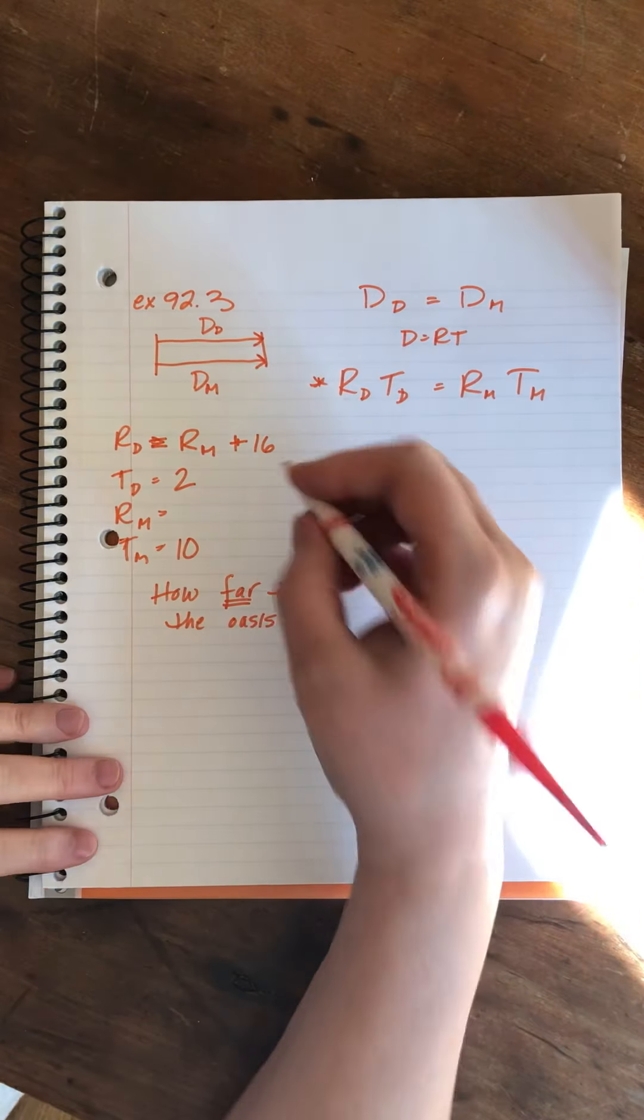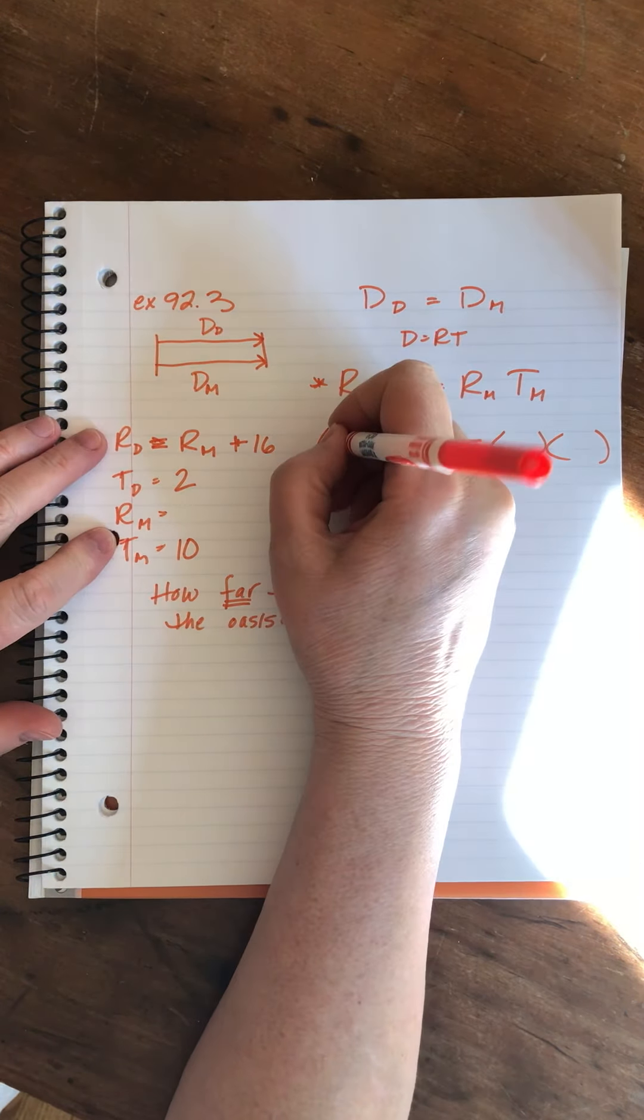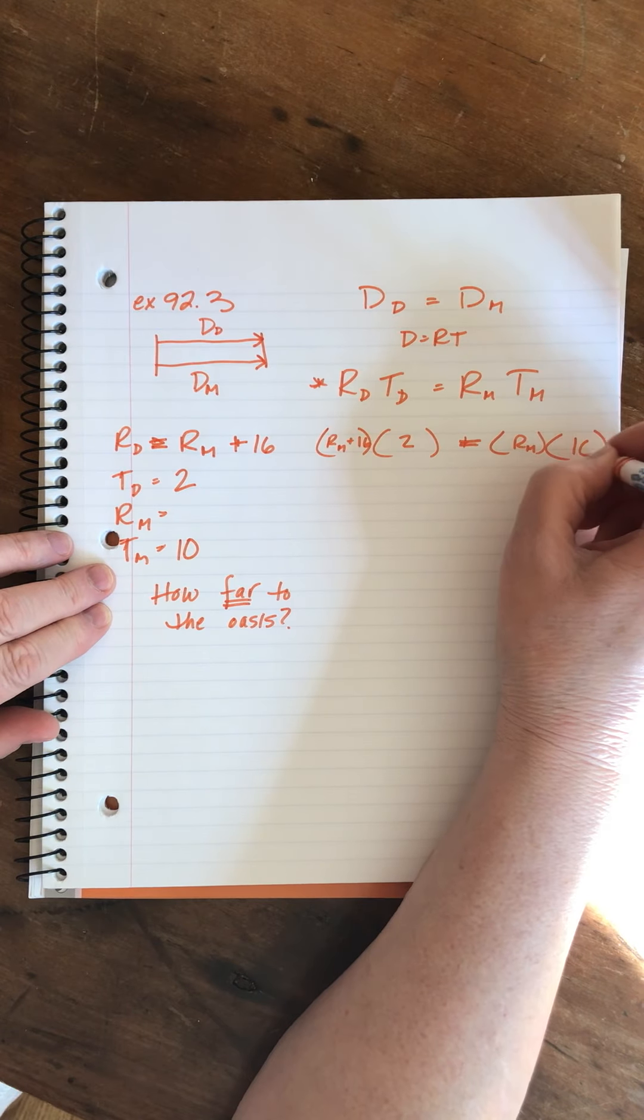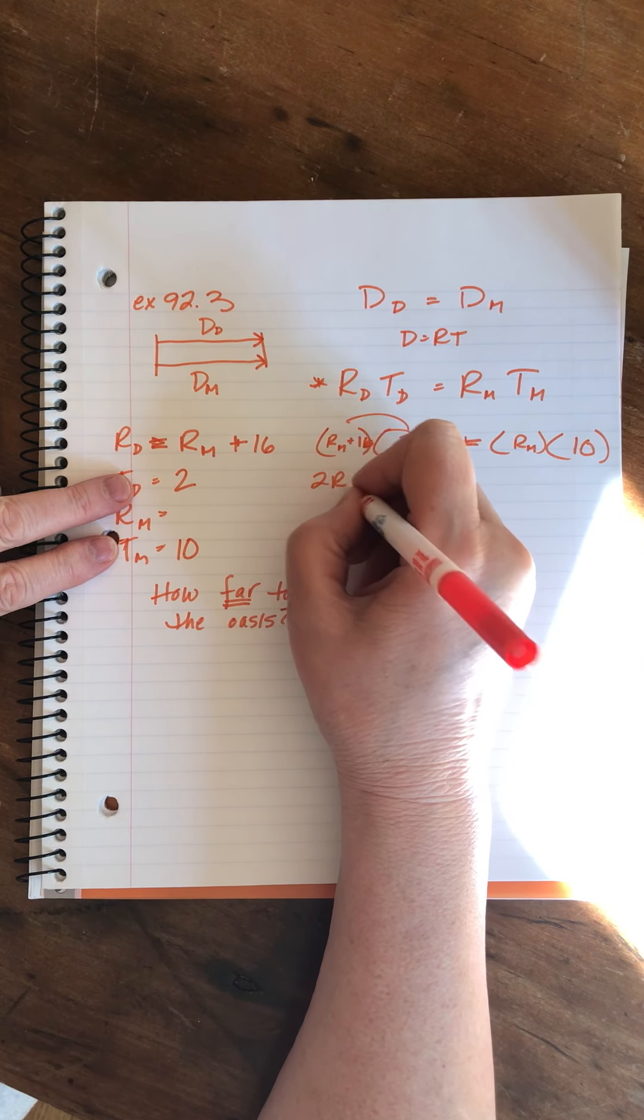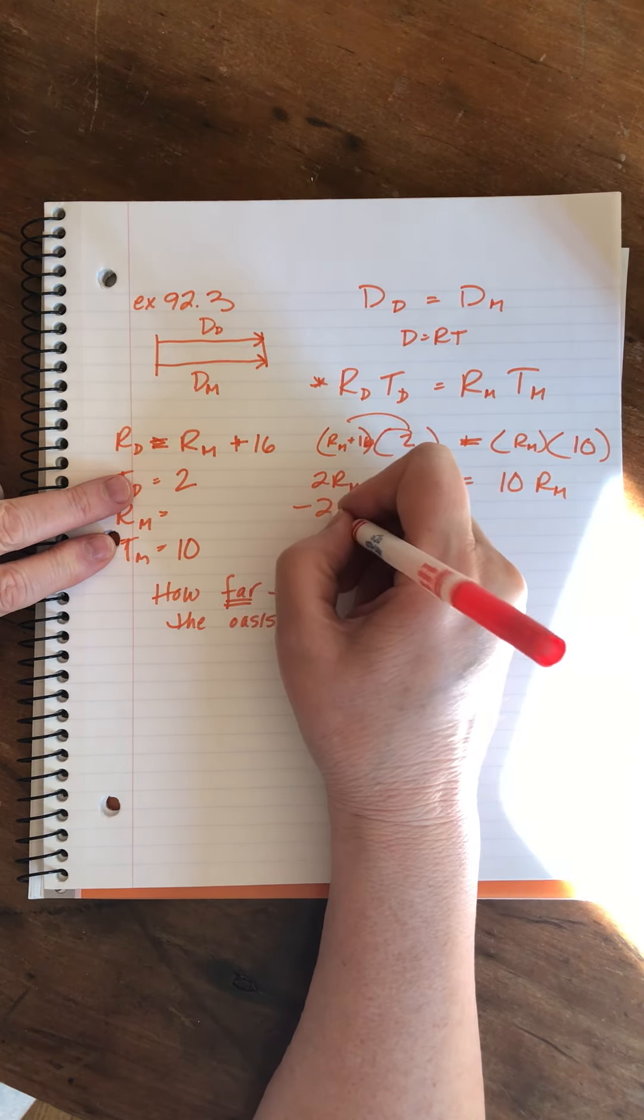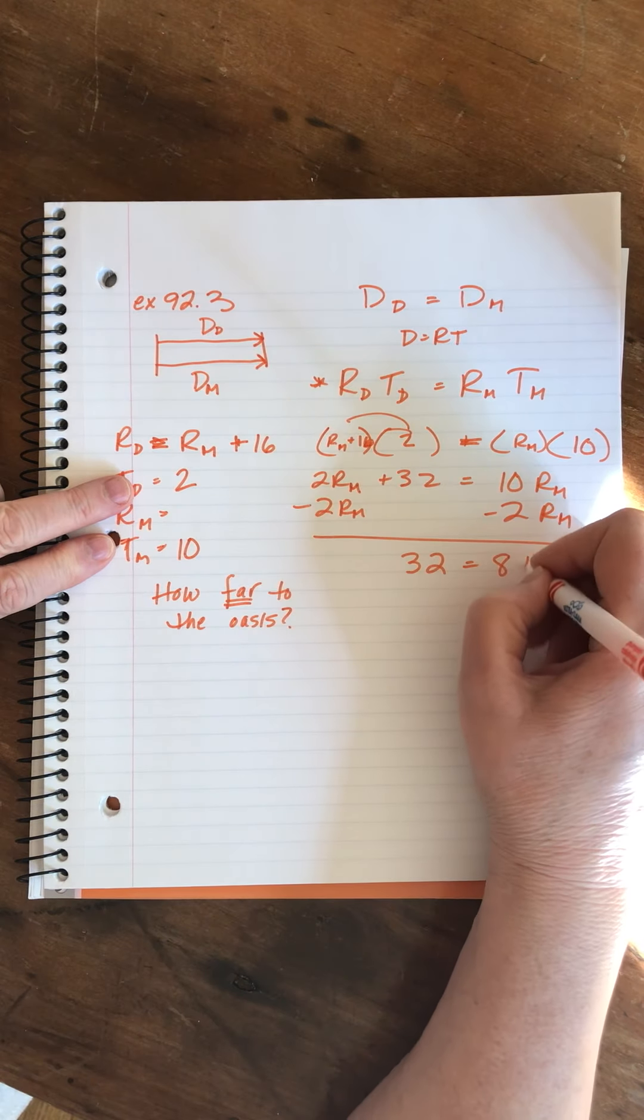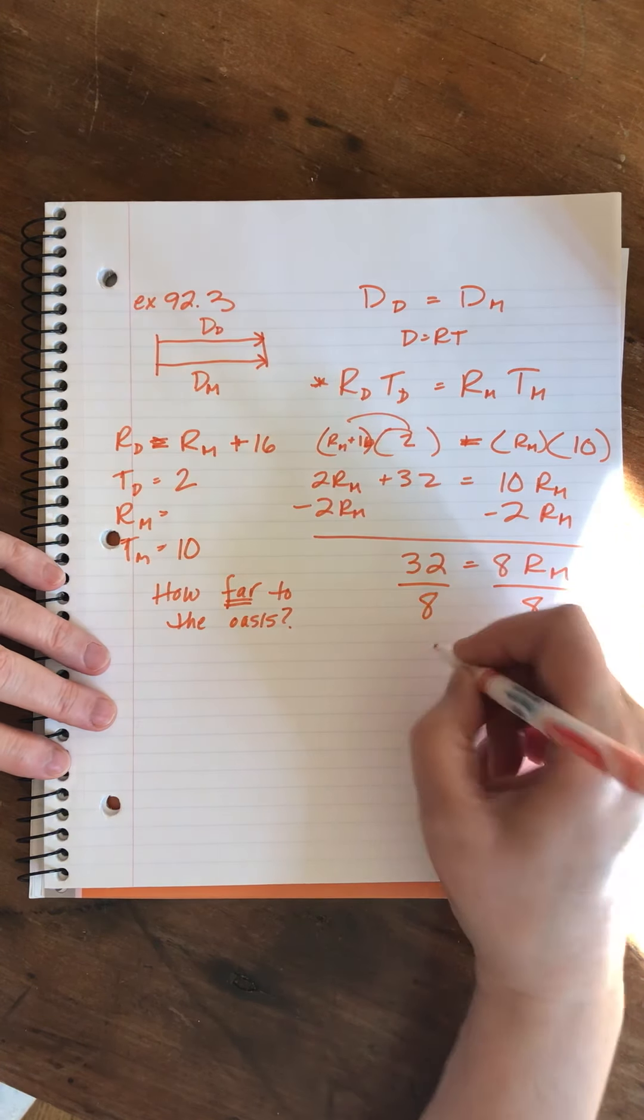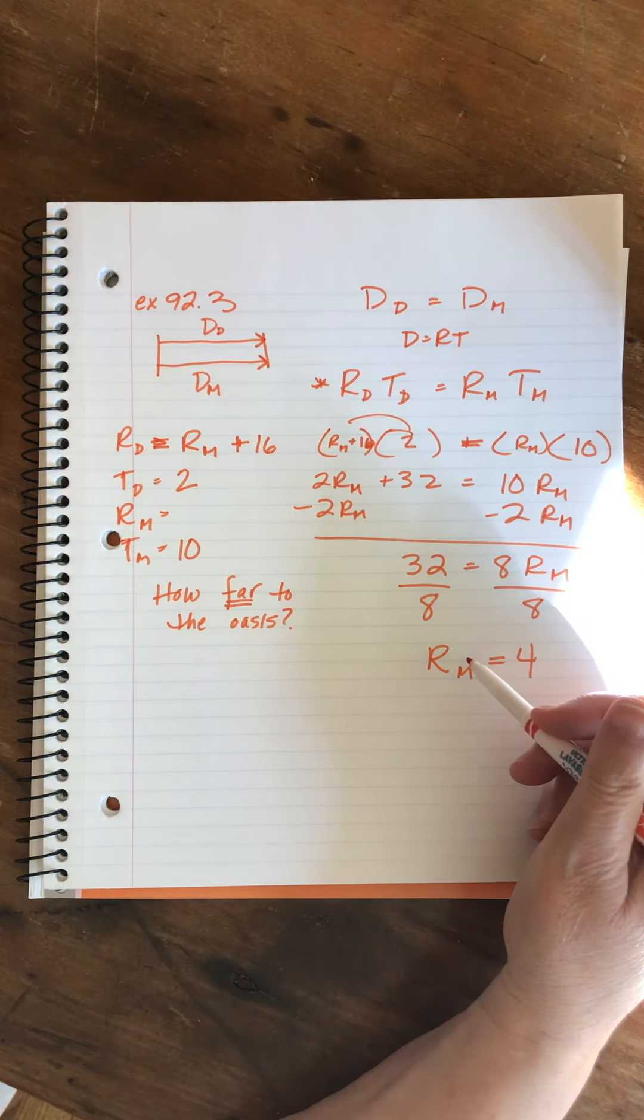Okay, now we've got all of our information gathered. Equals. And now let's fill in. Alright, distribute, that's a 16. It's kind of hard to tell. So, 2Rm plus 32 equals 10Rm. We'll subtract two of these. 32 equals 8Rm. John usually makes the numbers come out very cute in these. Divide by 8. The rate of Madele was 4.